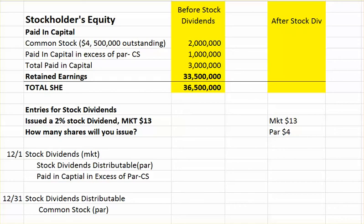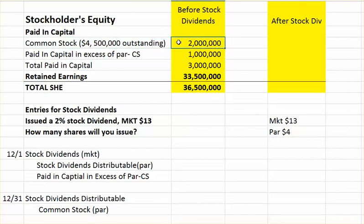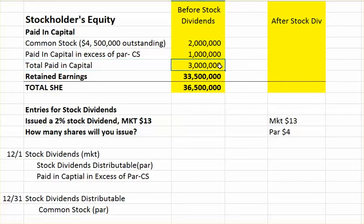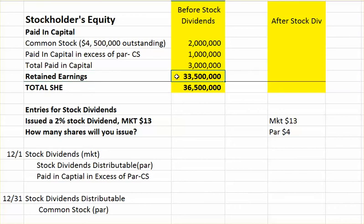Hey guys, this is Ms. Morgan and we're going to discuss how stock dividends affect stockholders' equity. You'll see here in the problem that we have 5,000 shares of outstanding common stock, $4 par, $2 million value. We have paid-in capital for common stock of $1 million, so total paid-in capital is $3 million. Retained earnings at the beginning of the problem is $33,500,000, for total stockholders' equity of $36,500,000.